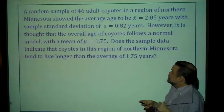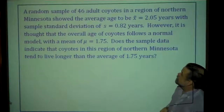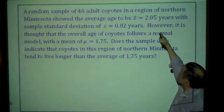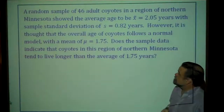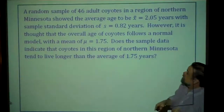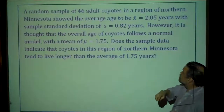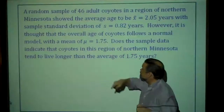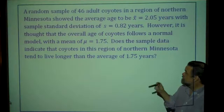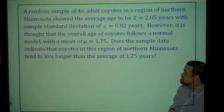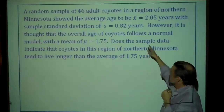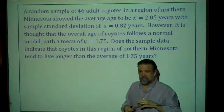Here's our example: a random sample of 46 adult coyotes in a region of northern Minnesota showed the average age to be 2.05 years with a sample standard deviation of 0.82 years. However, it's thought that the overall age of coyotes follows a normal model with a mean of 1.75 years. What we're wondering is: does this sample data indicate that coyotes in this region of northern Minnesota tend to live longer than the average of 1.75 years?